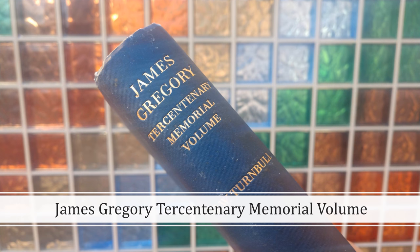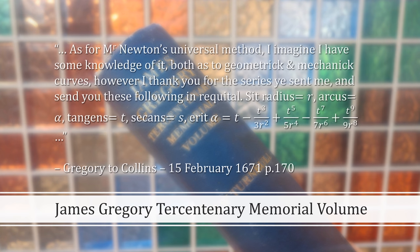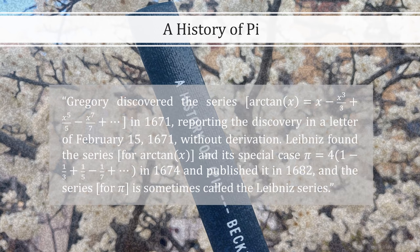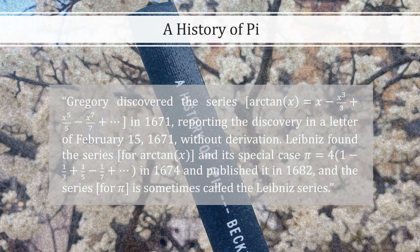This book should look familiar to those who saw my Taylor series video. Here, James Gregory gives us that Taylor series for the arctangent. And for a lot of this video, I'm going to keep referring to History of Pi by Peter Beckman, which is an excellent read that I highly recommend. Beckman writes, Gregory discovered the series for the arctangent in 1671, reporting the discovery in a letter, the one I showed earlier.